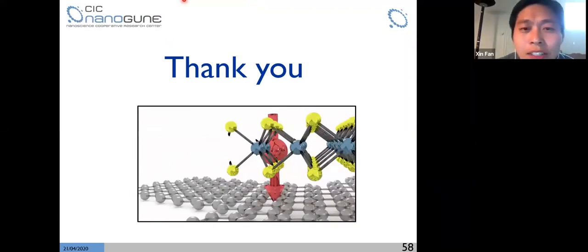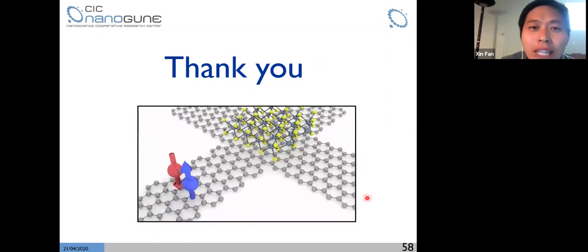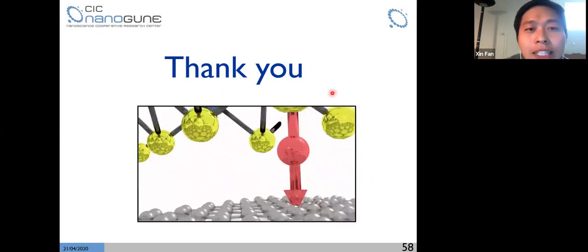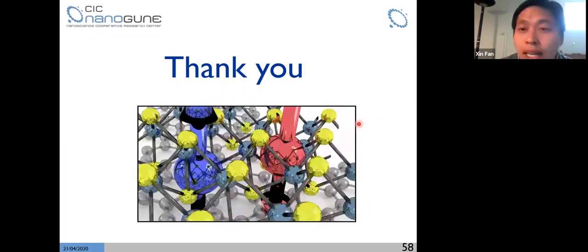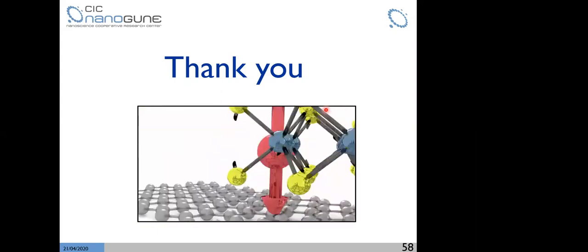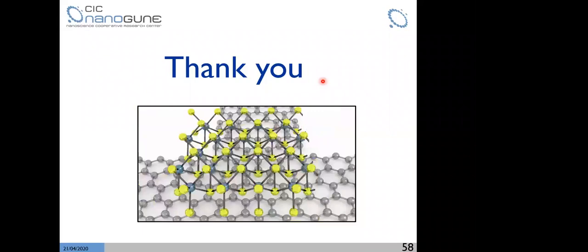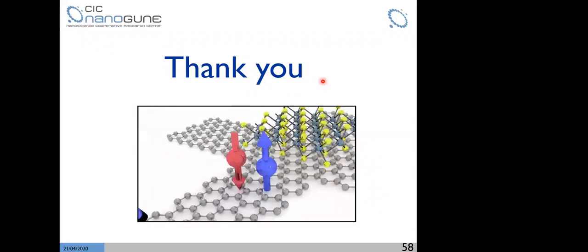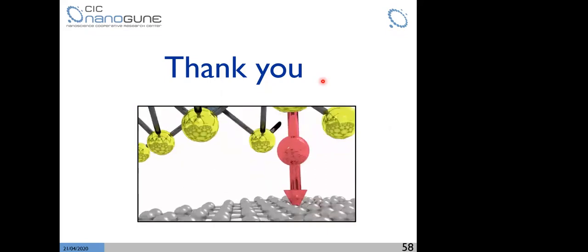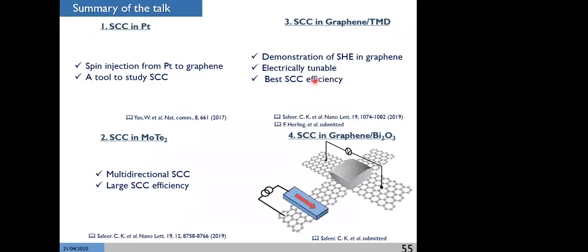Thank you, Sophia, for the very exciting talk. Let's send a round of virtual applause by clicking the Reactions button at the bottom of the Zoom screen. We are now taking questions — please use the Raise Hand option by clicking Participants at the bottom of the screen and then clicking Raise Hand in the pop-up menu. Nerjar from Northeastern University, please go ahead with your question. You mentioned two possible effects in the bismuth oxide sample and molybdenum ditelluride — one is proximity effect and another is skew scattering. Can you elaborate on how to experimentally isolate these two effects?